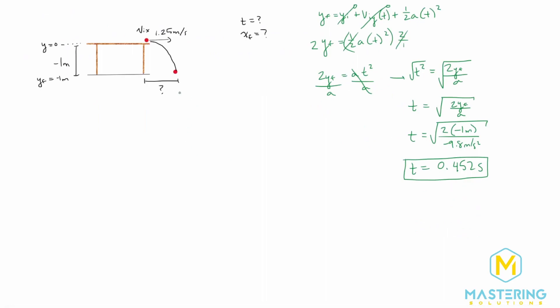Now we need to figure out how far away from the edge of the table did it land on the floor. To do that, we're going to take this time, because we said already that the x component of the velocity does not change. So for this entire 0.452 seconds, it's going at this speed.